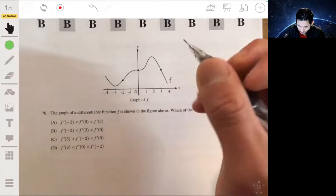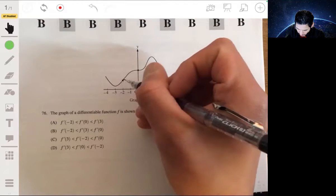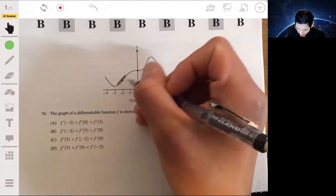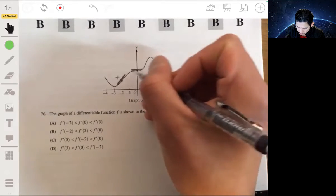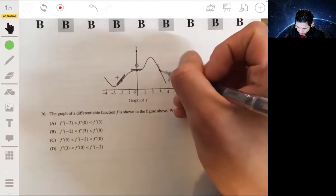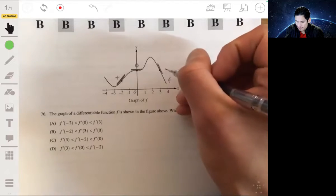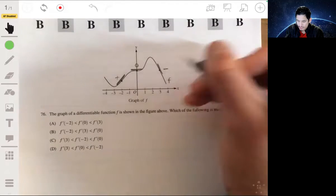At negative two you have a tangent line like that, so the slope would be positive. At zero it looks like a horizontal tangent line, so the slope would be zero. And at three the tangent line is sloped downward, so we have a negative slope.